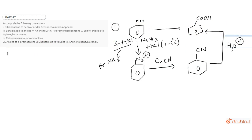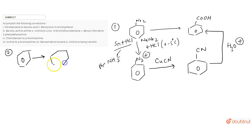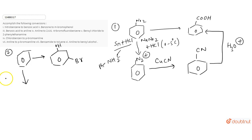In the next conversion we start from benzene and convert it into meta-bromophenol. There should be a phenol group and it's at the meta position. For introduction of any group at the meta position, we have to introduce an electron-withdrawing group into the benzene ring, which is NO2. So we perform nitration of benzene to get Ph-NO2.